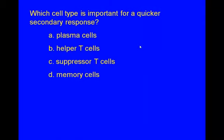Which cell type is important for a quicker secondary response? A — plasma cells, B — helper T cells, C — suppressor T cells, or D — memory cells? The answer is D, memory cells.